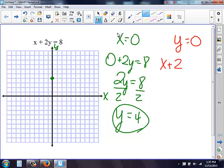So I get x plus 2 times 0, equals 8. 2 times 0 is 0. Therefore, I get x equals 8.